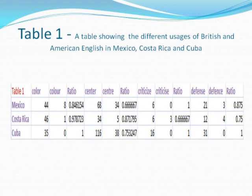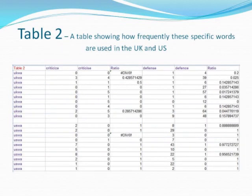Table 1 shows the different usages of British and American English in Mexico, Costa Rica and Cuba. Table 2 shows how frequently these specific words are used in the UK and US.